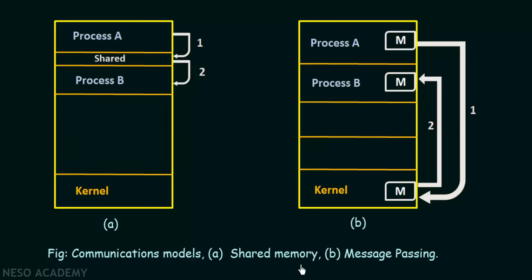These are the two most common models of inter-process communication or IPC: shared memory and message passing. These are very important topics in operating systems under the subtopic of inter-process communication. I hope this was clear to you. Thank you for watching and see you in the next one.